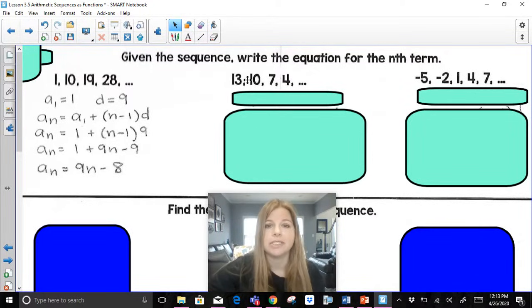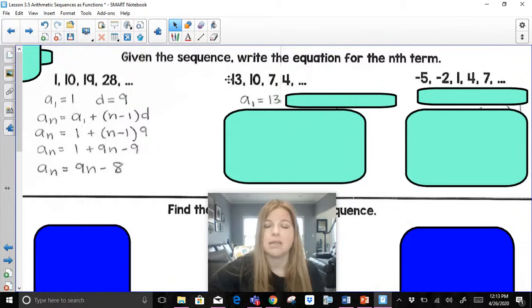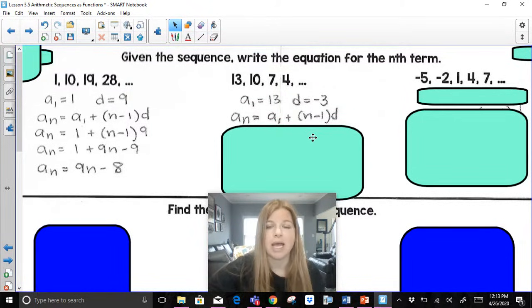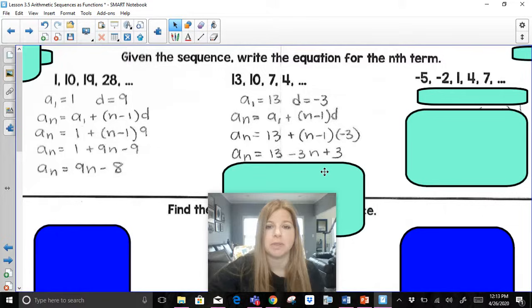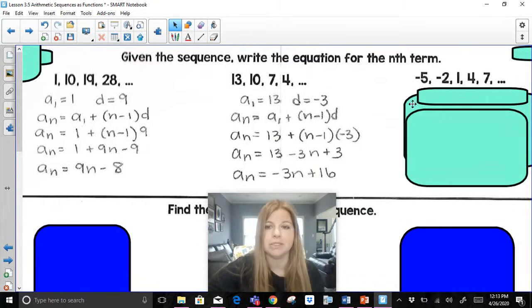Let's try the next one, 13, 10, 7, 4. The first term of the sequence is 13. The common difference d here is that it's subtracting by 3, so d is negative 3. Here is my formula. I go ahead, I substitute in my 13 for my a sub 1 and my negative 3 for d. I'm going to now distribute that negative 3, so negative 3 times n, negative 3 times negative 1, which gives me 13 minus 3n plus 3. I'm going to go ahead, combine my like terms, and it becomes negative 3n plus 16.